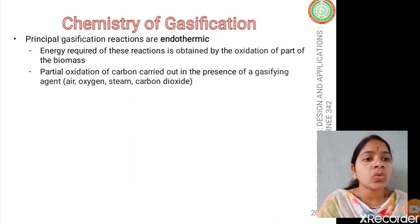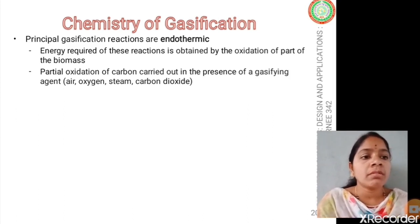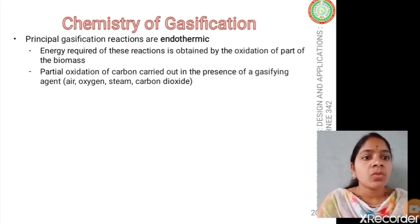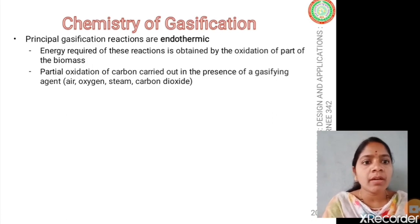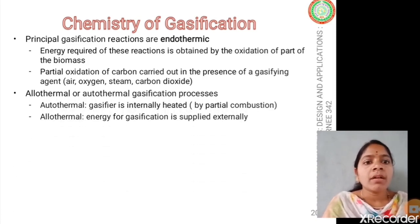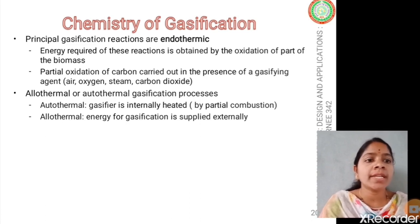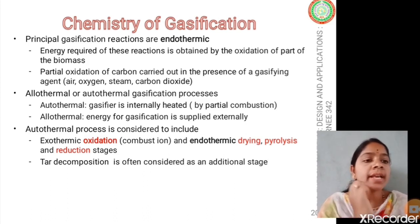There are four zones in which reactions take place: drying, pyrolysis, oxidation, and reduction. Partial oxidation of carbon is carried out in the presence of gasifying agents. Different types of gasifying agents are used — air, oxygen, steam, and even carbon dioxide — to produce different quality producer gases. This involves allothermal or autothermal gasification. Autothermal means the gasifier is internally heated, whereas allothermal means it is externally heated.